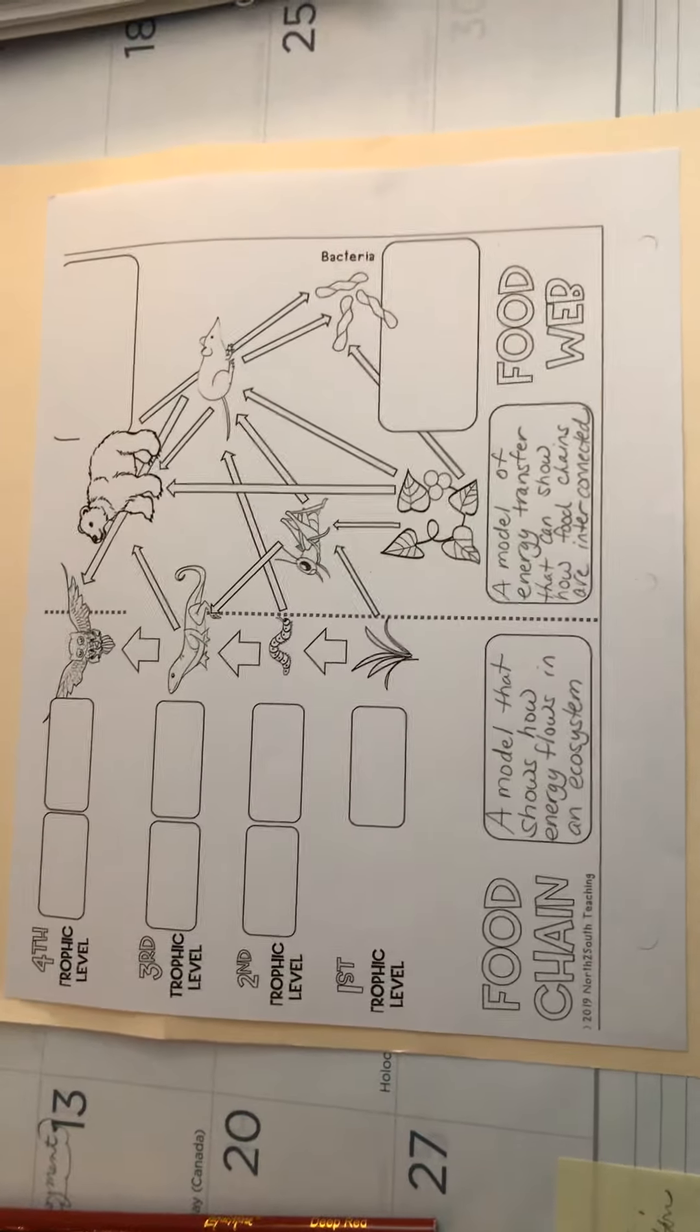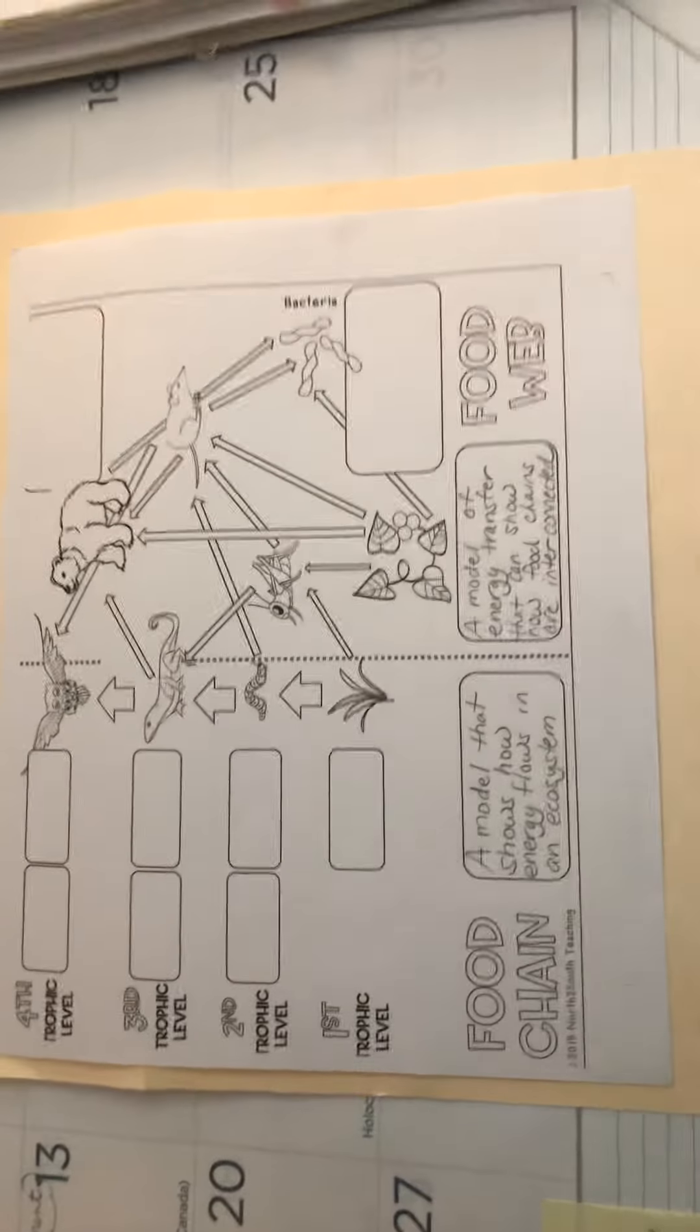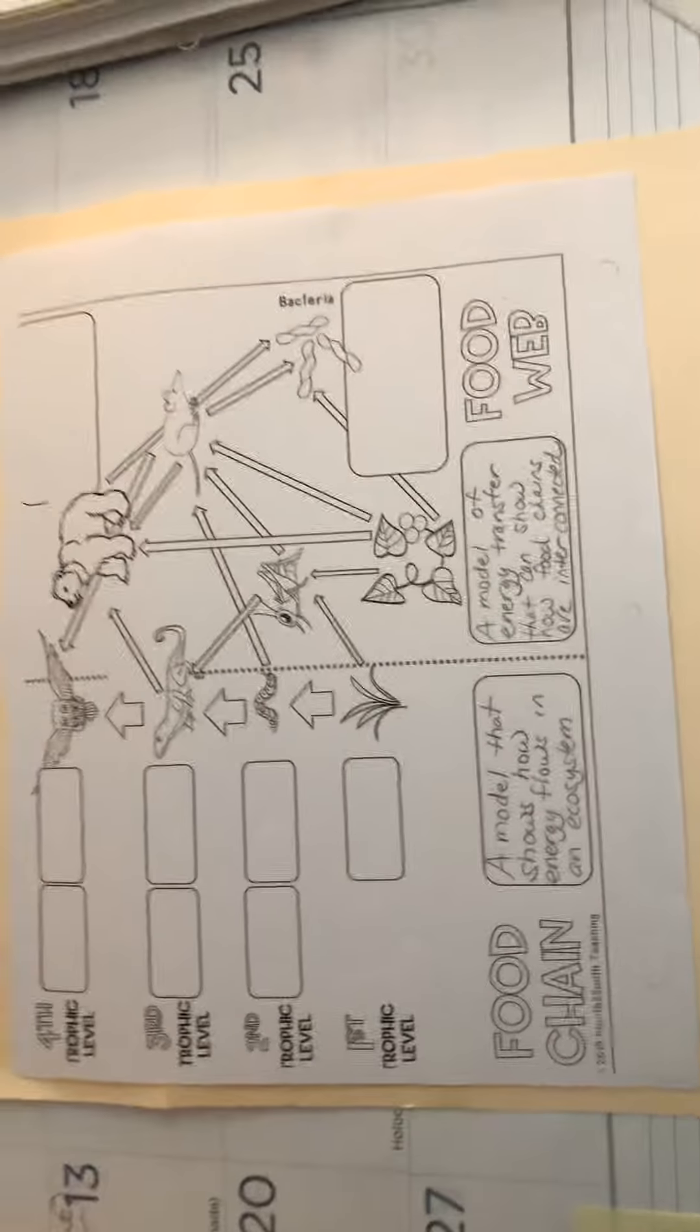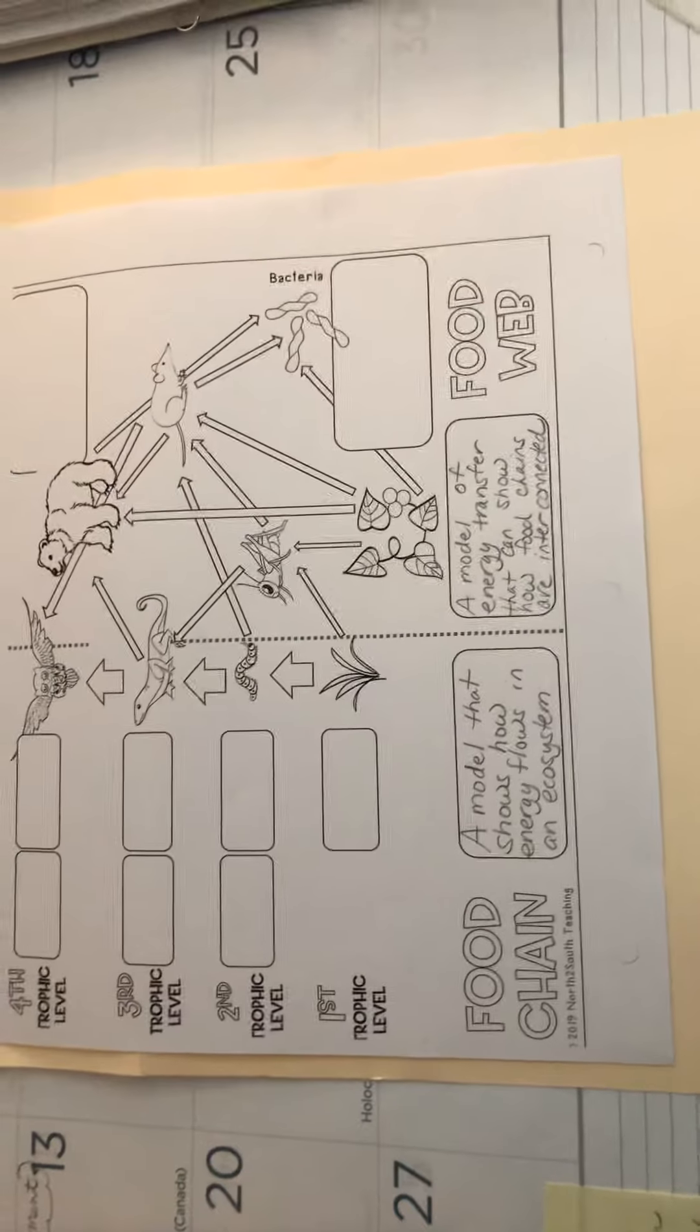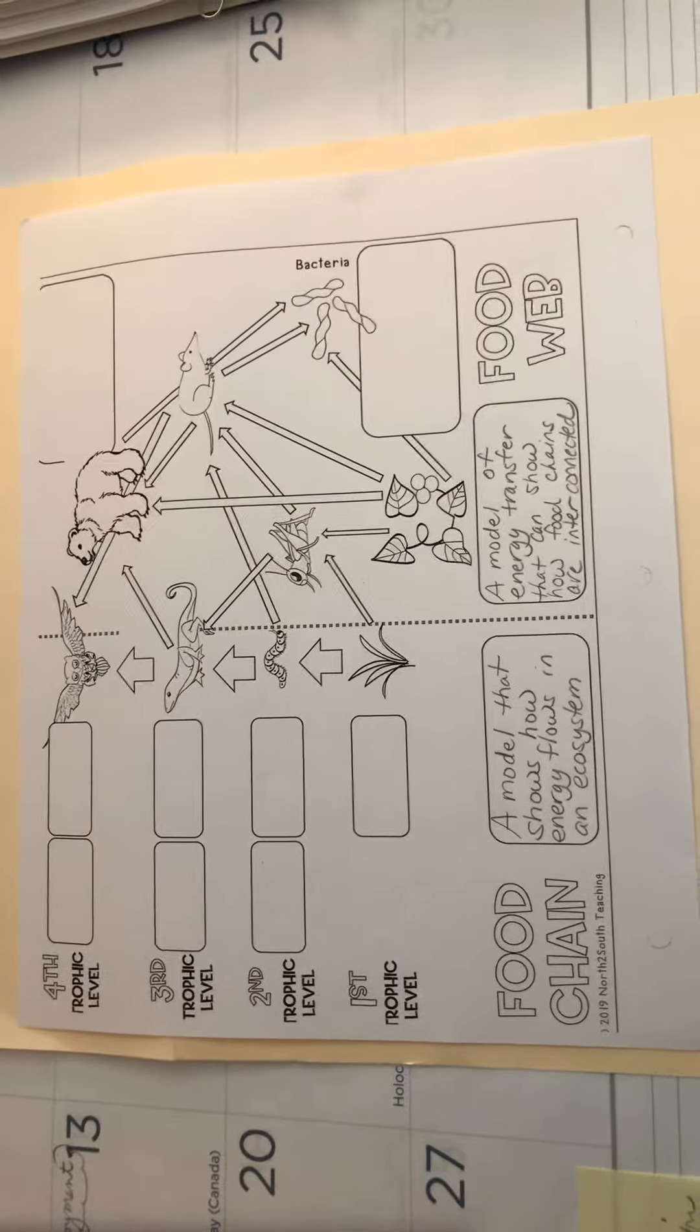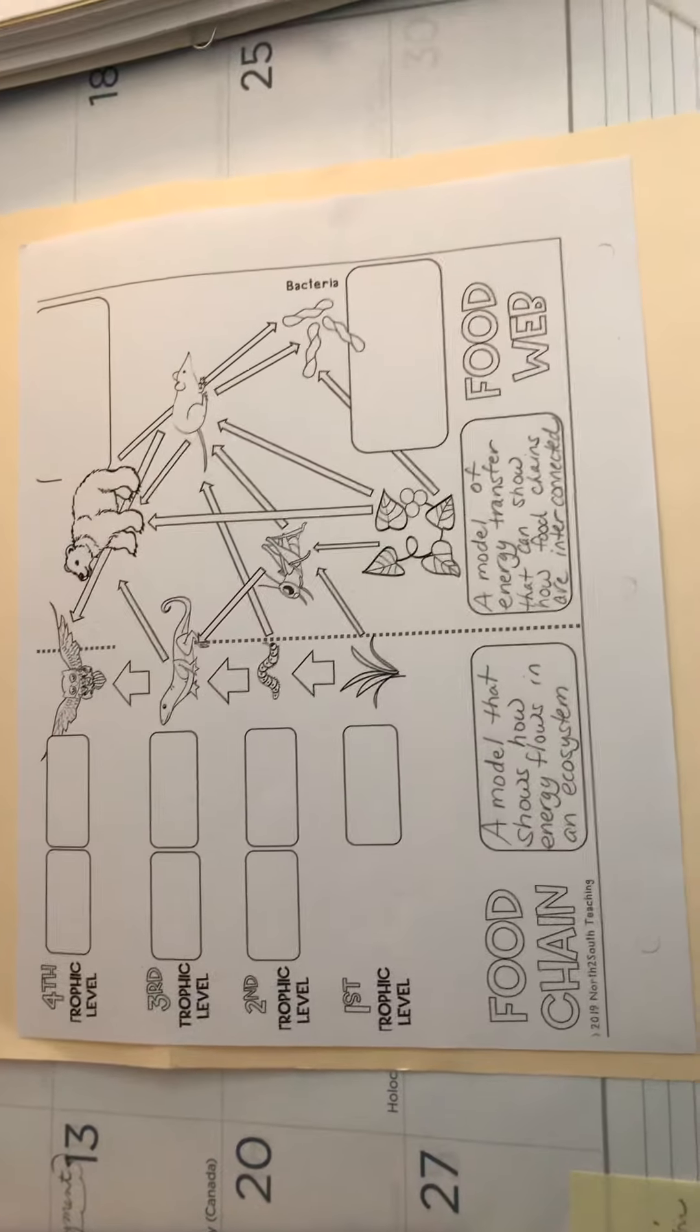The first thing we want to point out is they have defined food chain and food web, and both of those can be found on your PowerPoint. A food chain is a model that shows how energy flows in an ecosystem, and basically we're talking about where the energy originates. We know that in all